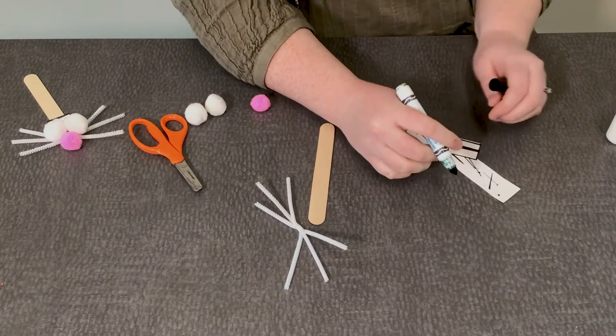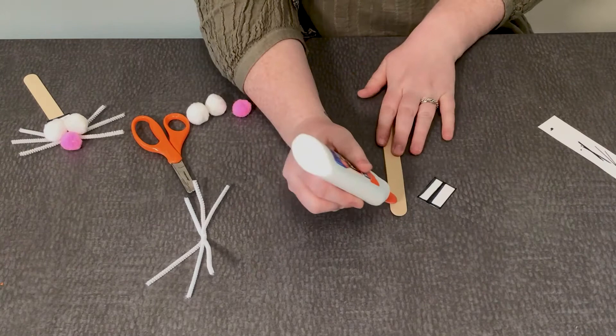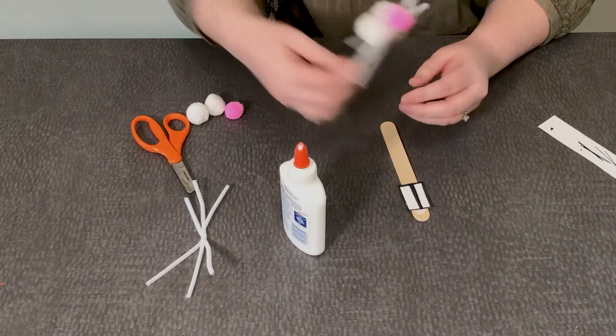And voila, this is going to be our first thing that we glue down. I'm just going to take my glue at the top of the popsicle stick and glue it down. Next we need our bunny whiskers so we're going to glue down our bunny whiskers.